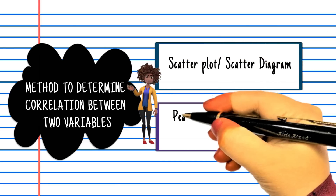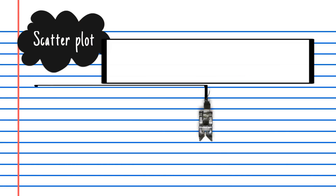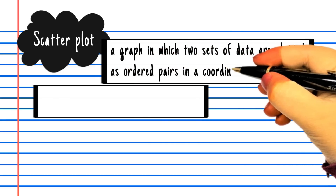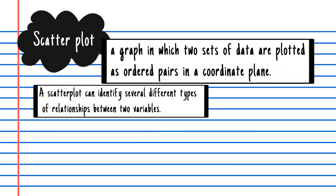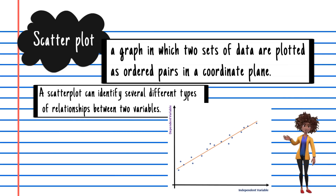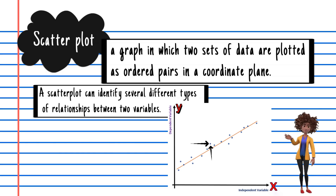A correlation exists between two variables when one of them is related to the other in some way. A scatterplot is the best place to start. A correlation can be expressed visually by drawing a scatterplot, also known as a scatter graph, scatter chart, or scatter diagram. A scatterplot is a graphical display that shows the relationships or associations between two numerical variables, plotted on a horizontal x-axis and a vertical y-axis, where each individual pair is plotted as a single point.